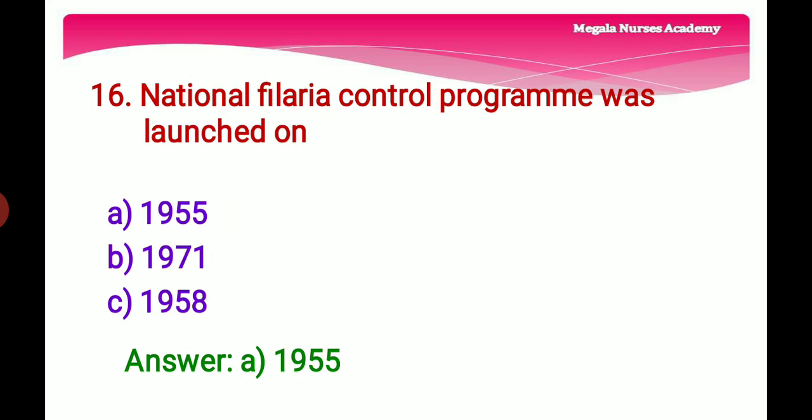Sixteenth question: The National Filaria Control Program was launched on — Option A: 1955, Option B: 1971, Option C: 1958. The right answer is Option A, 1955, because the National Filaria Control Program was launched in 1955 with the objective of delimiting the problem, undertaking control measures in endemic areas, and training personnel.